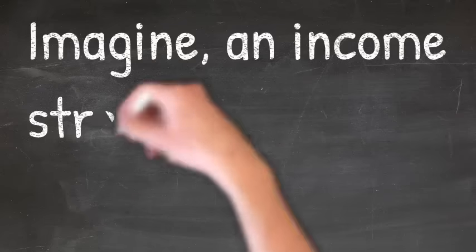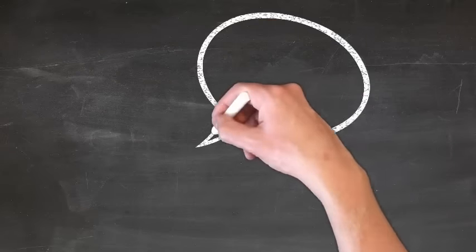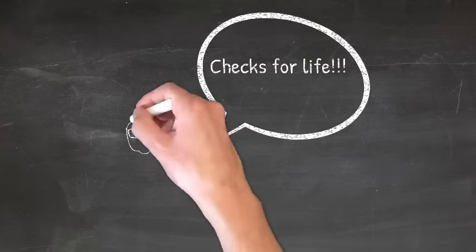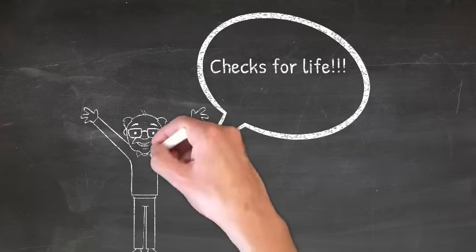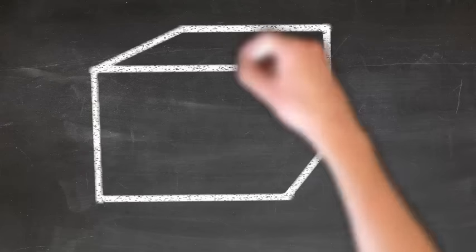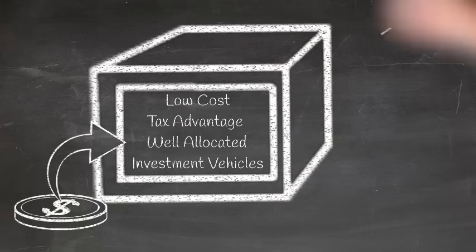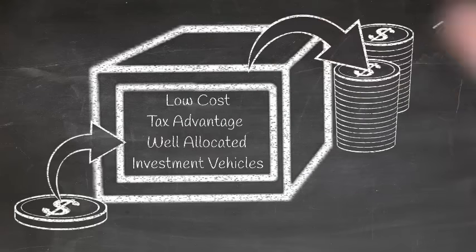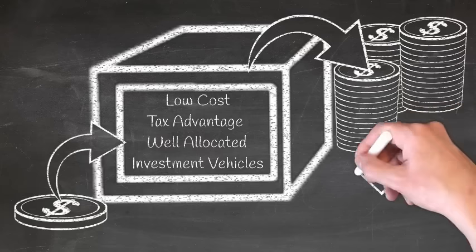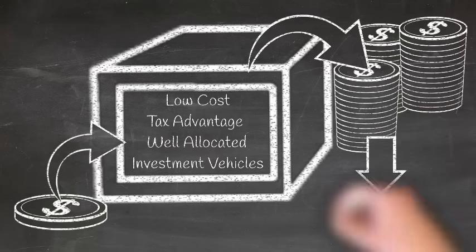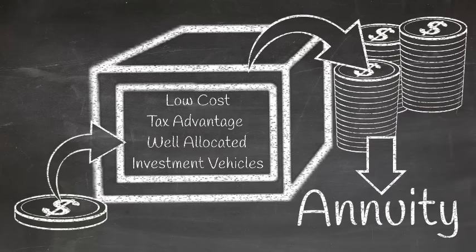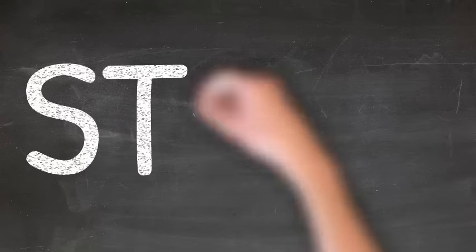Step five: Create a lifetime supply of income. Imagine what it would be like for you to receive a check for life, and that check for life can afford you the life that you've always dreamed of. How? It starts by accumulating a mass amount of wealth by investing in low-cost, tax-advantaged, well-allocated investment vehicles, followed by converting your wealth into an annuity that pays you a consistent income every single month for life.